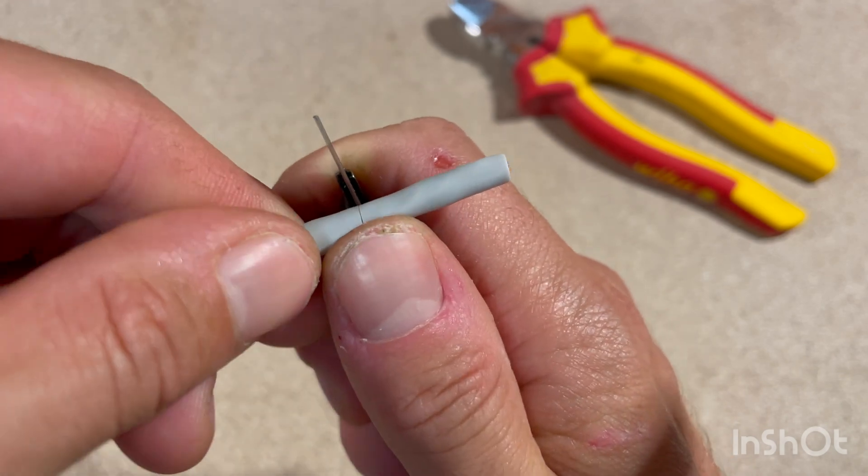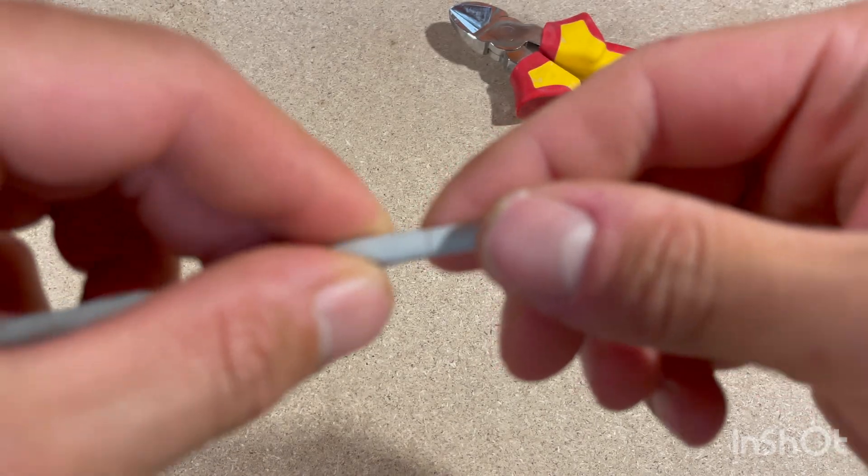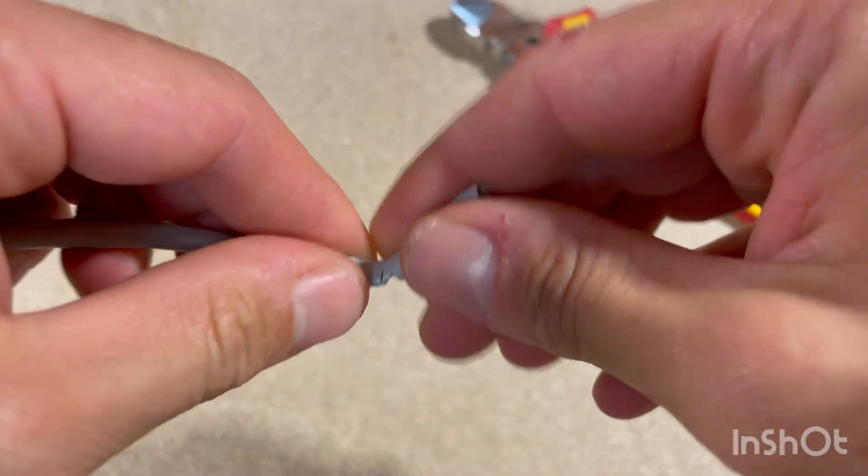Strip the cable to remove the outer jacket from the UTP cable. Be careful not to nick the wires inside.